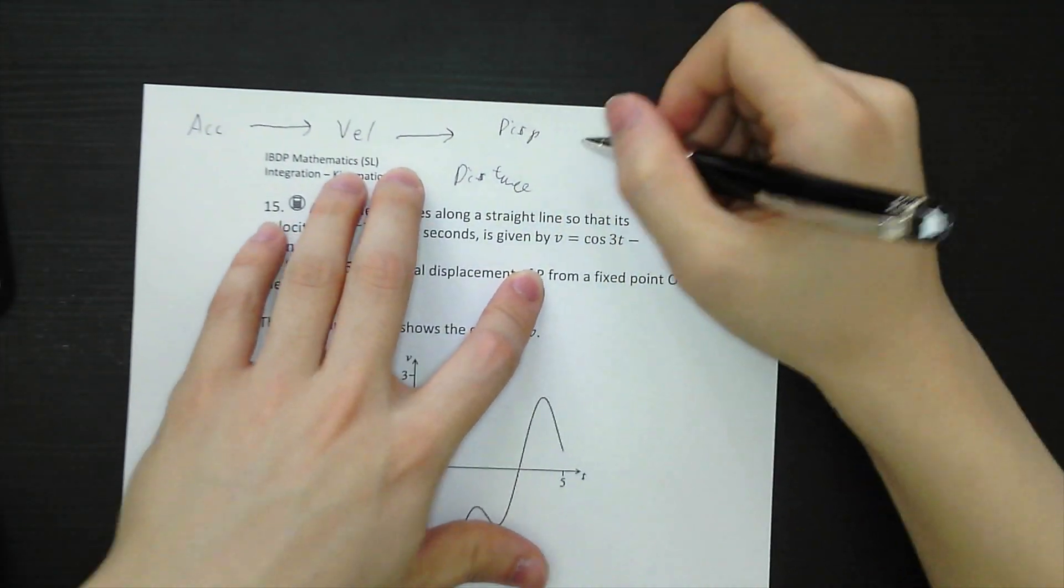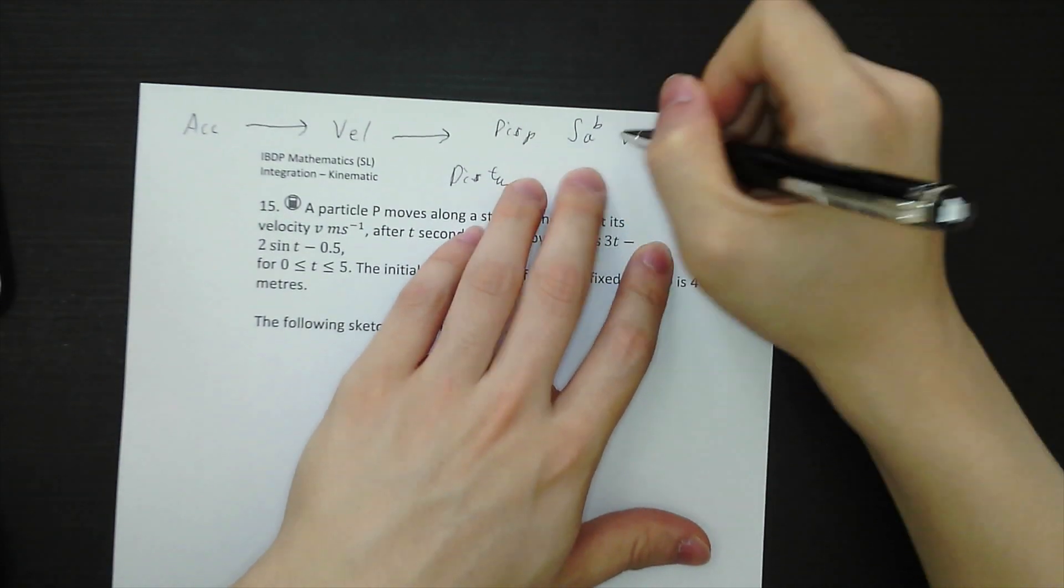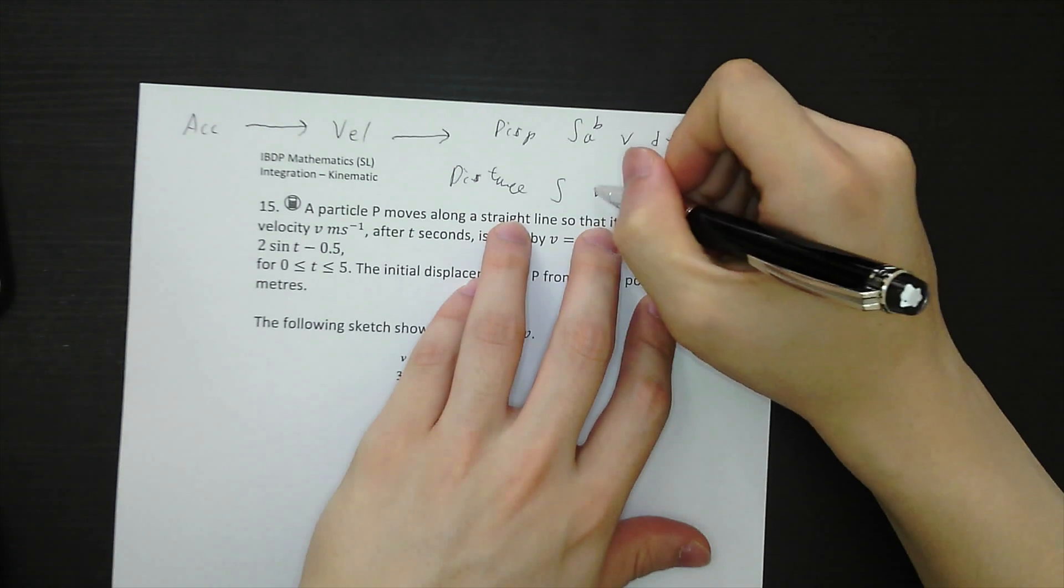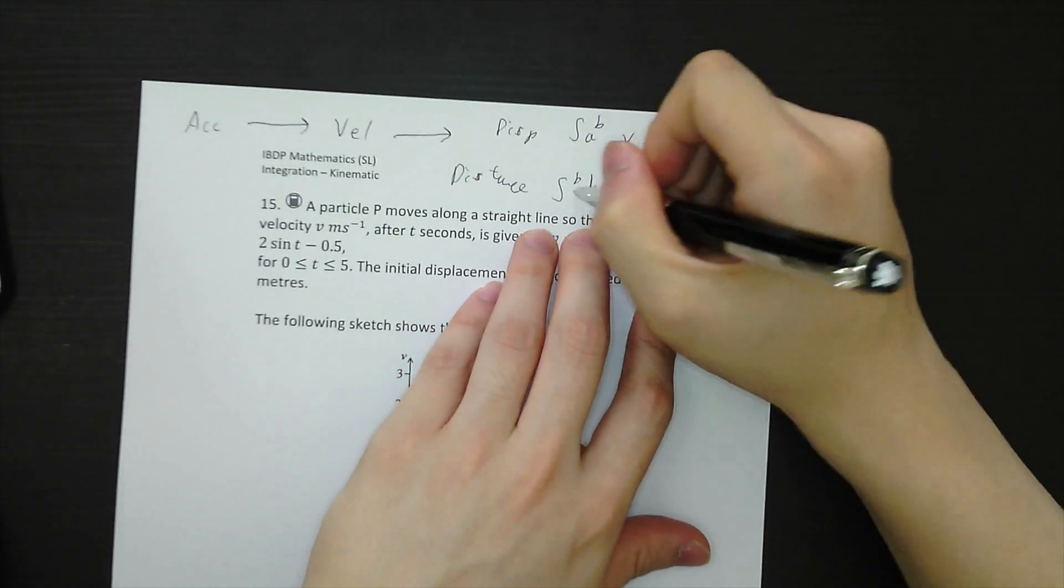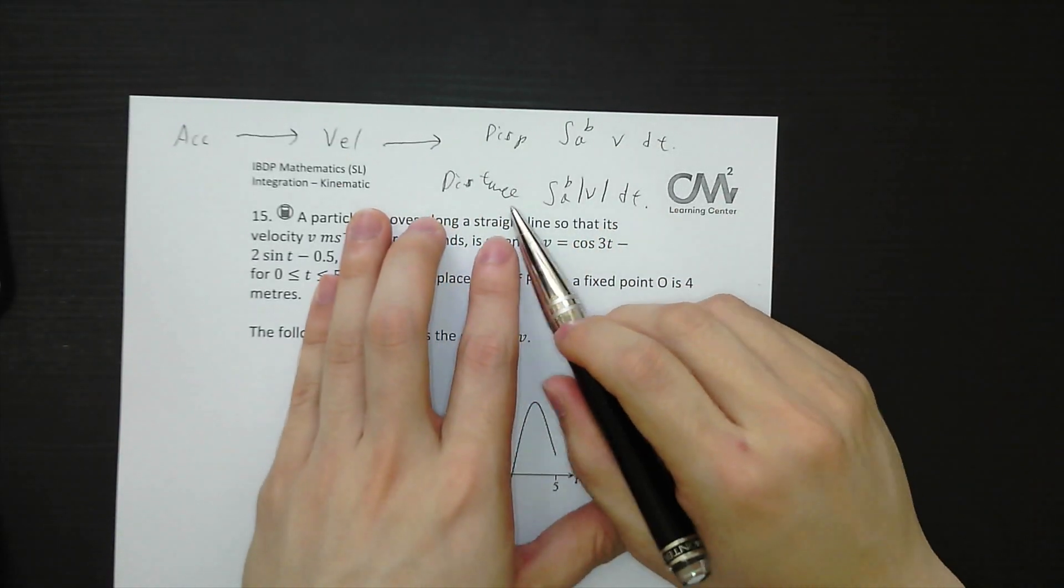For displacement, it's integration of velocity from a to b, a boundary. But distance is integration of velocity with absolute dt from a to b. So displacement without absolute, distance with absolute values.